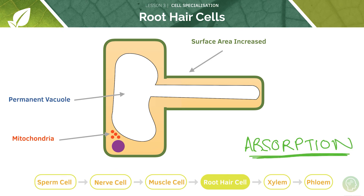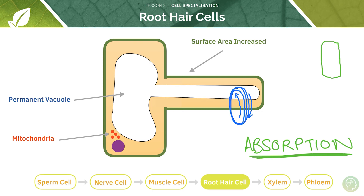Perhaps pause the video and try to think of ways in which this cell looks like it's adapted for absorption. Root hair cells greatly increase the surface area of the roots in order to increase the movement of water into the cell — that's a really extensive surface area. They also have a permanent vacuole, which increases the speed of osmosis — the movement of water into the cell down its osmotic gradient, from a high water content to a low water content.